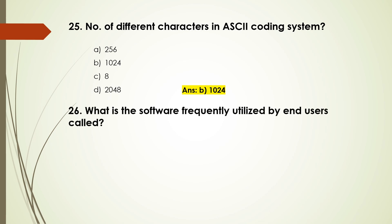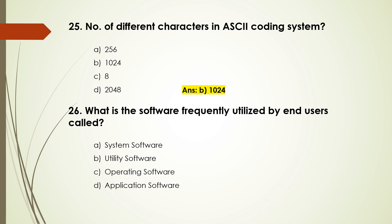Question number 26: What is the software frequently utilized by end users called? Options are: system software, utility software, operating software, application software. The answer is D, application software.